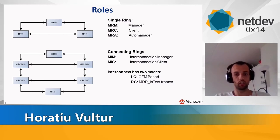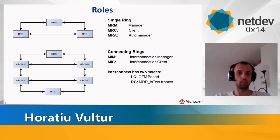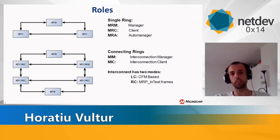In a ring, if we look at the top picture, we have one MRM which stands for manager. In a ring there can be only one manager, and there can be multiple clients, which is MRC. Also, in a ring there can be an auto-manager, and this behaves as a manager or as a client. It's a voting algorithm that goes between all these auto-managers.